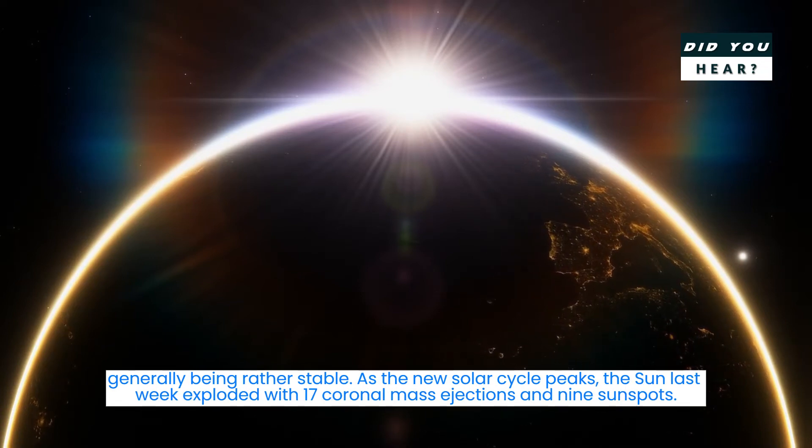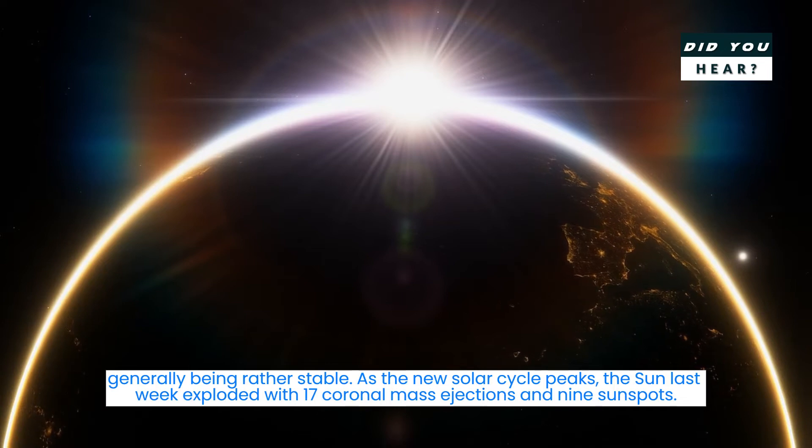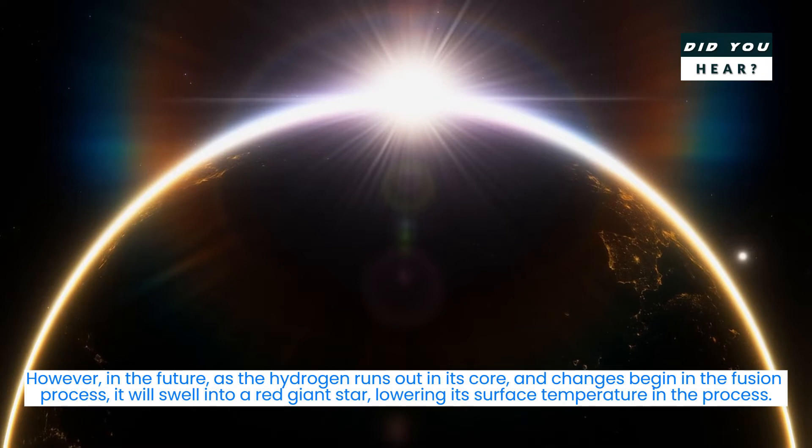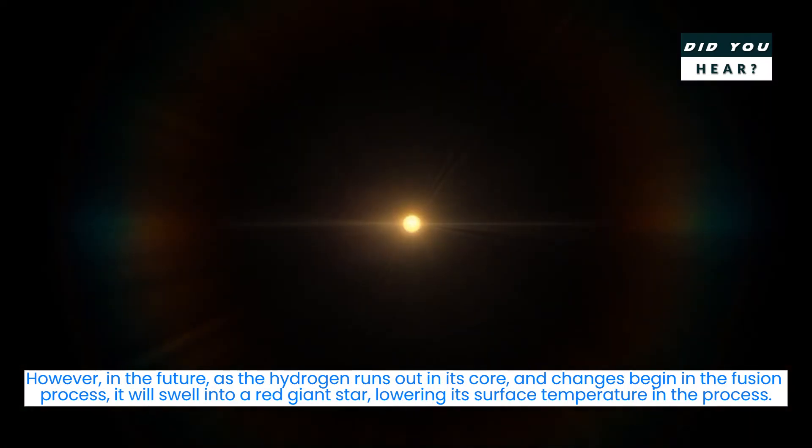As the new solar cycle peaks, the sun last week exploded with 17 coronal mass ejections and 9 sunspots. However, in the future, as the hydrogen runs out in its core and changes begin in the fusion process, it will swell into a red giant star, lowering its surface temperature in the process.